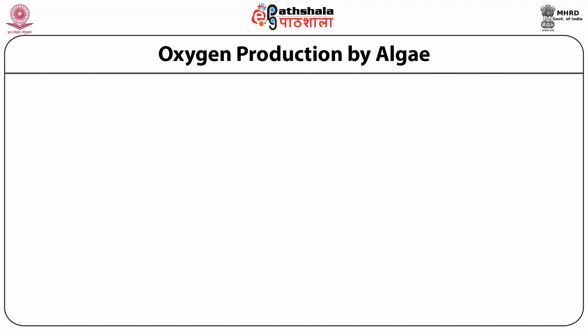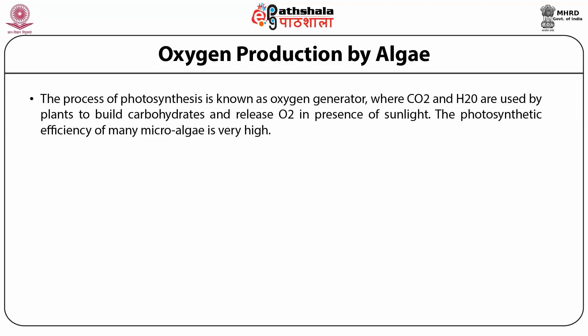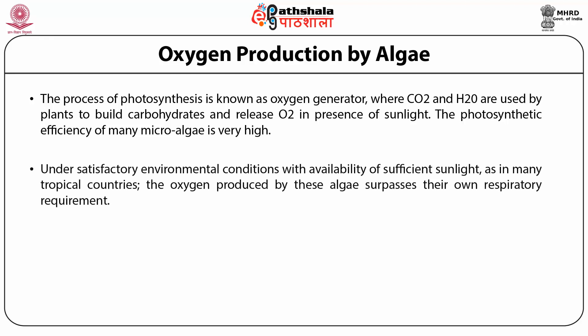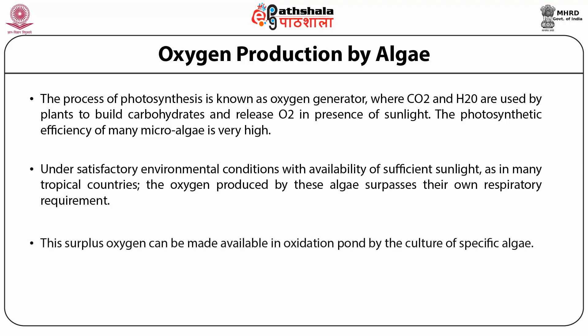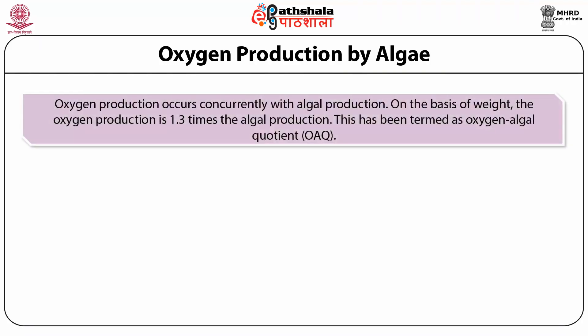Oxygen production by algae: The principle of photosynthesis makes plants oxygen generators, where carbon dioxide and water are used to build carbohydrates and release oxygen in the presence of sunlight. The photosynthetic efficiency of many microalgae is very high. Under satisfactory environmental conditions with sufficient sunlight, as in many tropical countries, the oxygen produced by these algae surpasses their own respiratory requirements. This surplus oxygen can be made available in oxygen ponds by culturing specific algae — it is an inexpensive and natural process. On the basis of weight, oxygen production is 1.3 times the algal production, termed the oxygen-algal quotient.